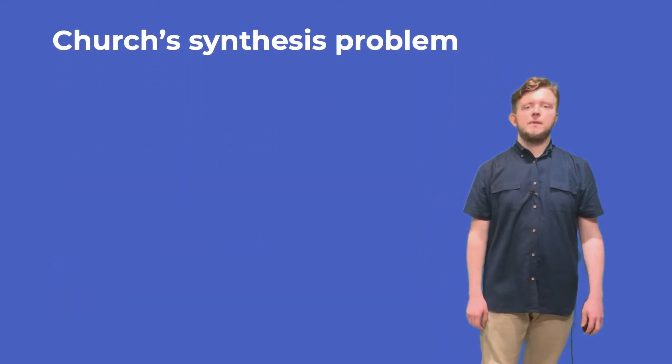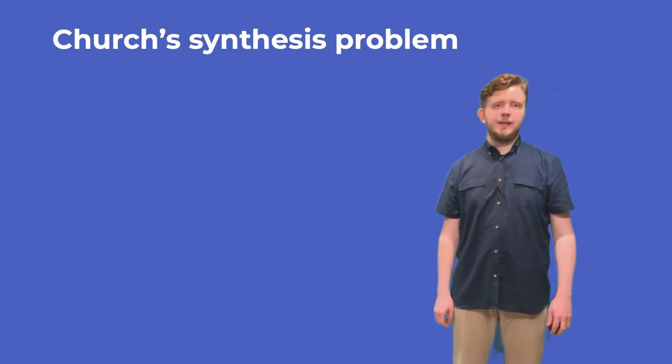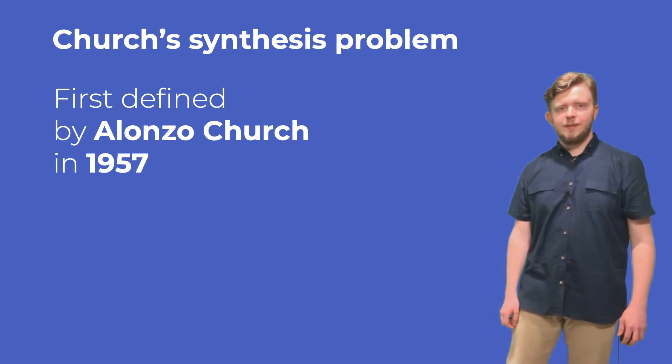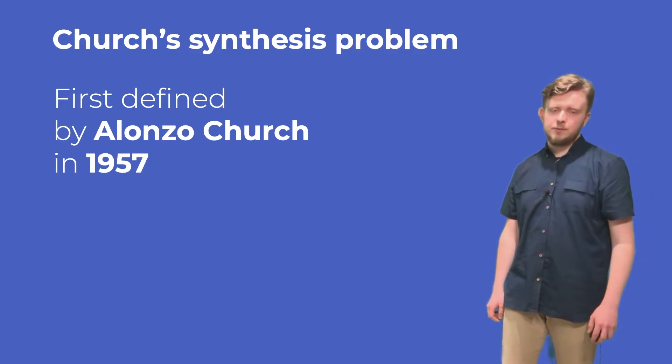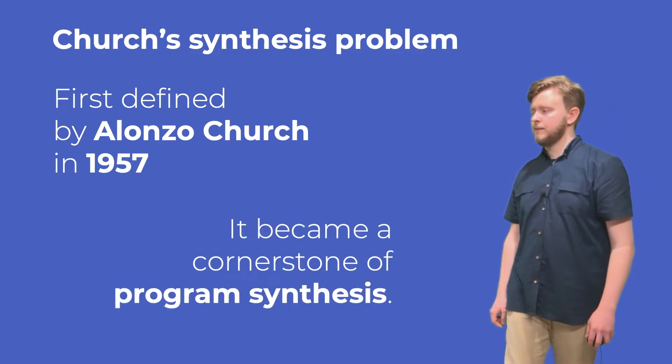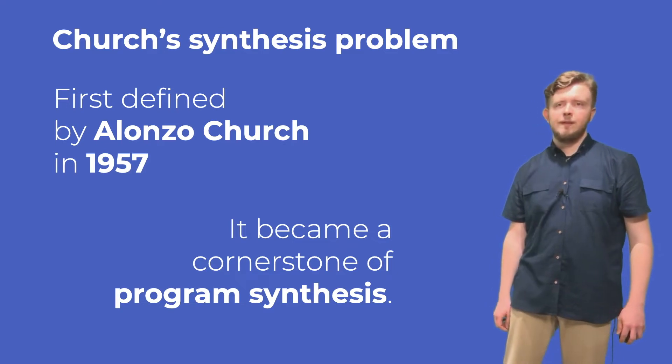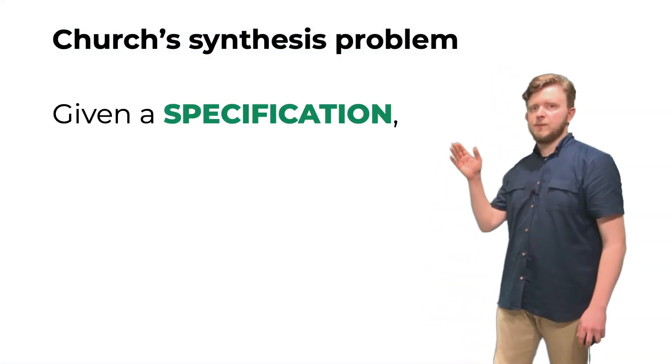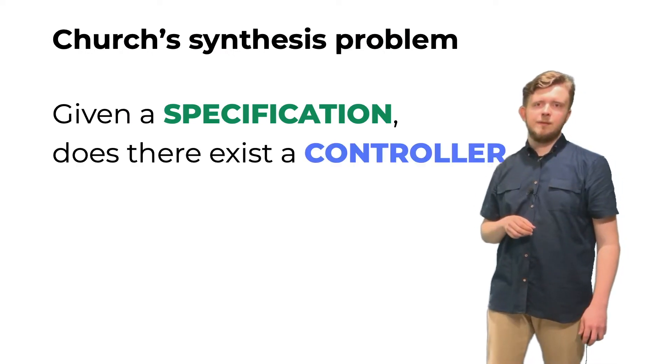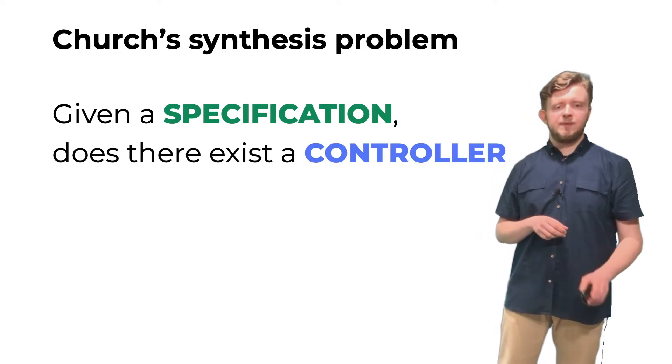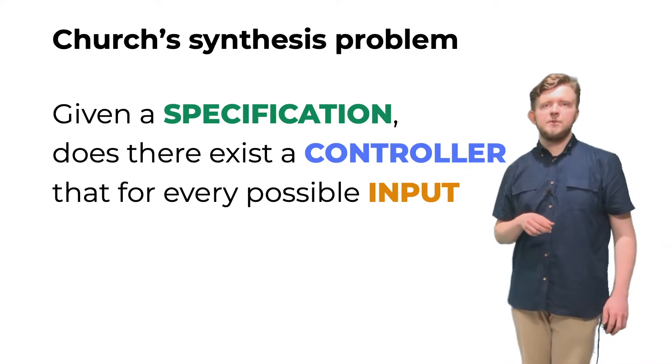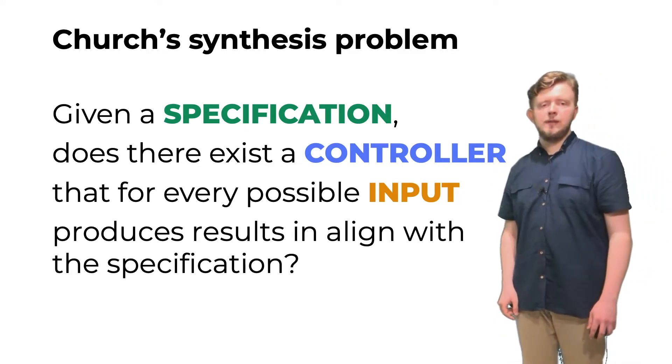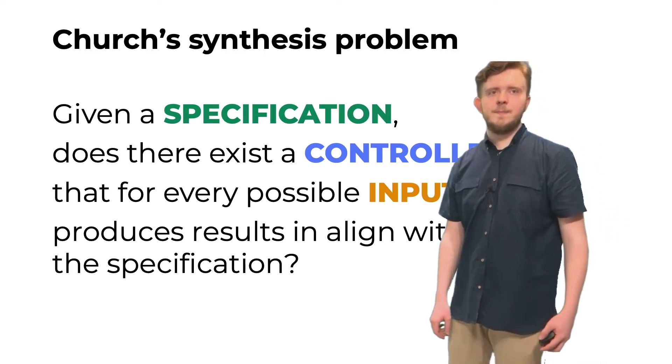This problem was first stated by Alonzo Church in 1957. Now it is seen by many as a cornerstone of program synthesis. It is defined as follows. Given a specification of some sort, does there exist a controller such that for every possible input, it will produce results matching the specification.